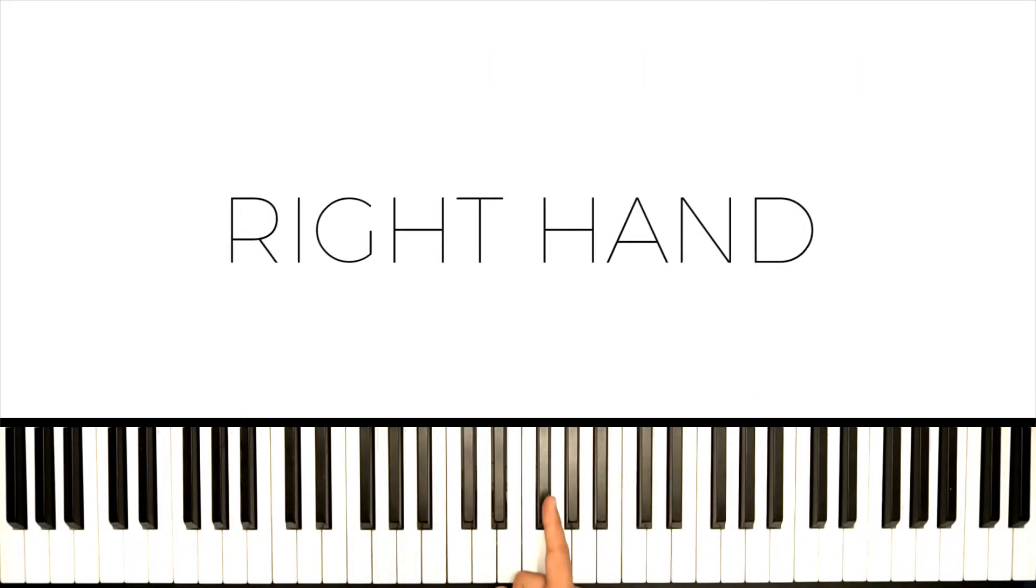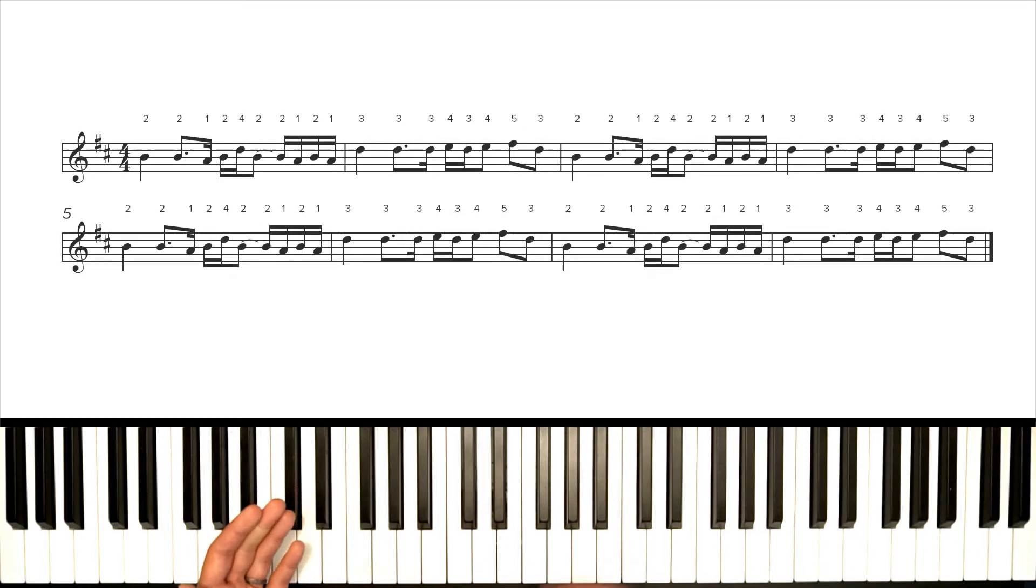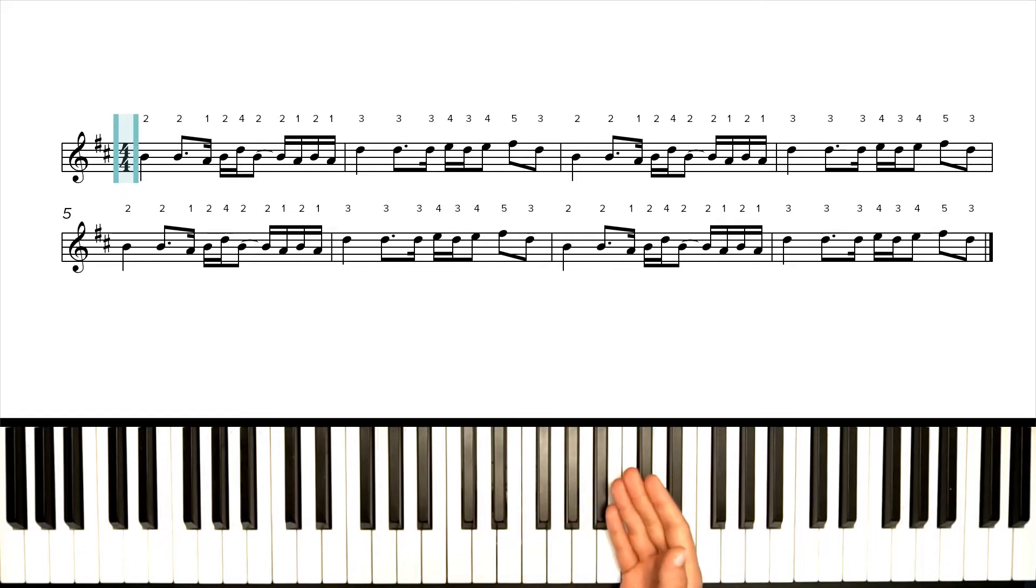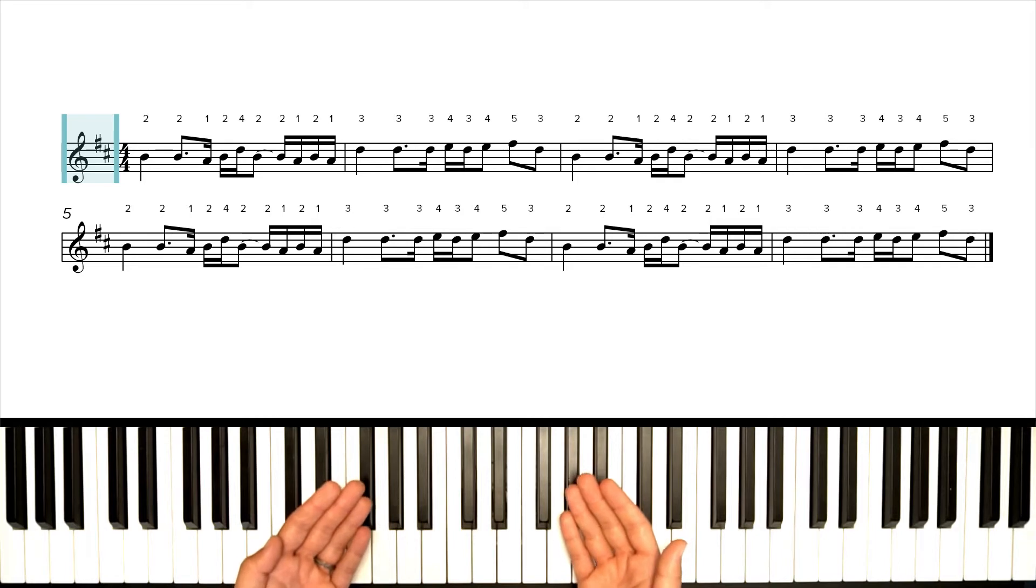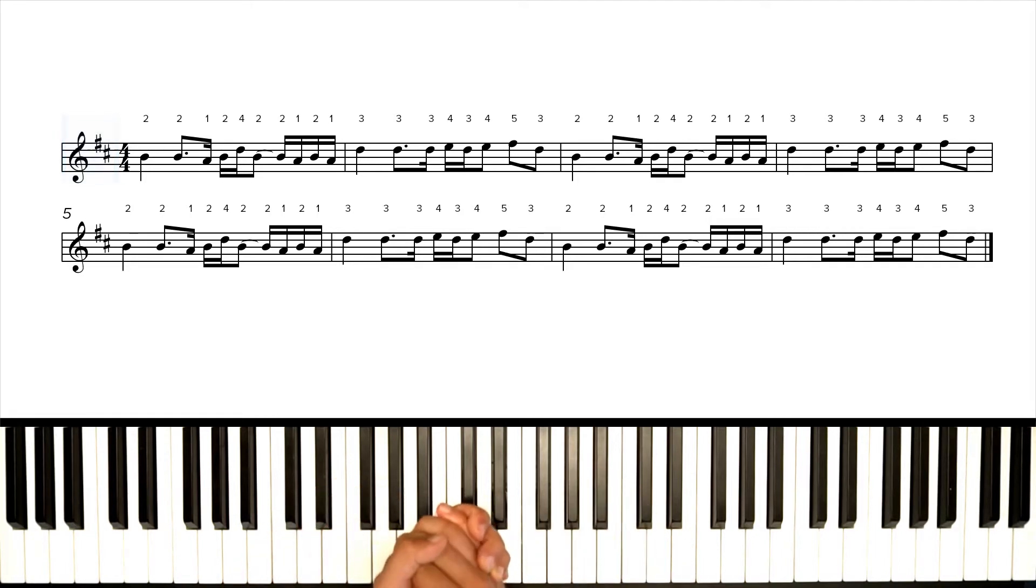All right let's start by going over the right hand but first time signature, key signature. We got to check those things out before we dive into any piece of music. Time signature here is 4-4, pretty straightforward. Key signature, two sharps, F sharp and C sharp. That means we're in the key of D major or B minor. Those are the two keys that are related because they share the same key signature.